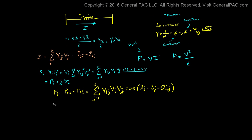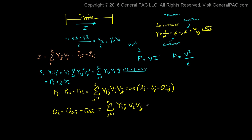The reactive power Q_i equals Q_Gi, the total generated reactive power of the i-th bus, minus Q_Li, the total load reactive power of the i-th bus. That equals the sum from j equals 1 to the n-th bus — same structure — but here it's different: now we're taking the sine term — sine of (angle_i minus angle_j minus θ_ij).